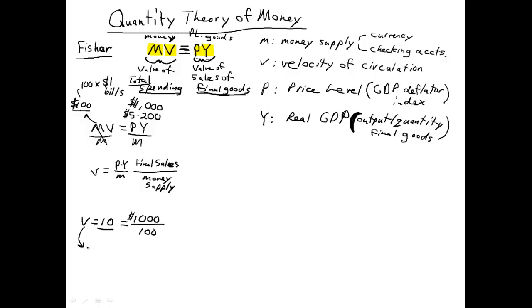And I like to think of it as the number of times the average dollar is spent per year. We're always talking about yearly rates here. We're talking about yearly GDP, yearly output. We're talking about yearly velocity, the yearly change in the price level, so on and so forth.